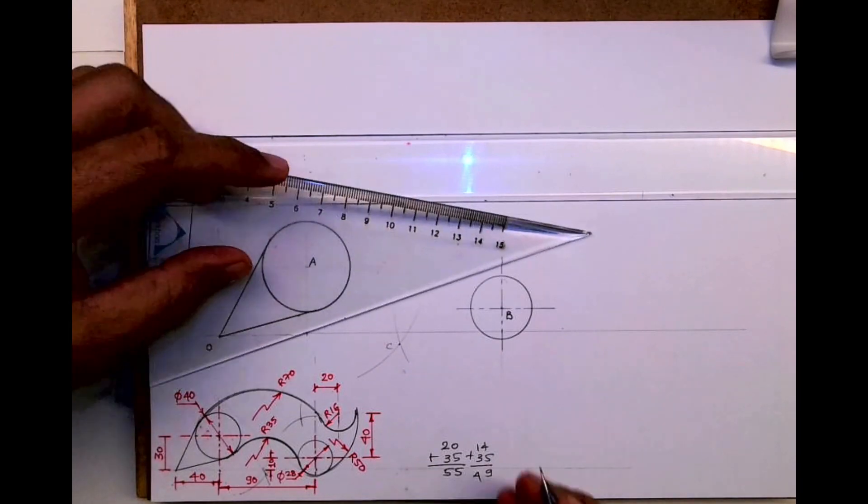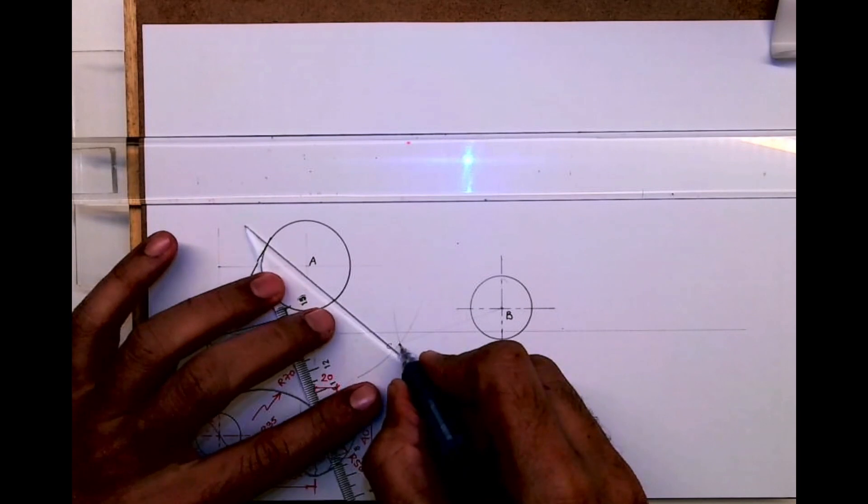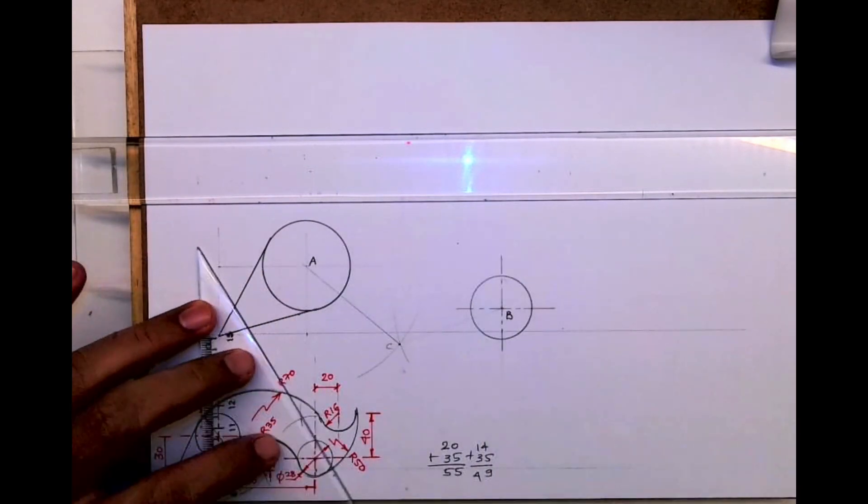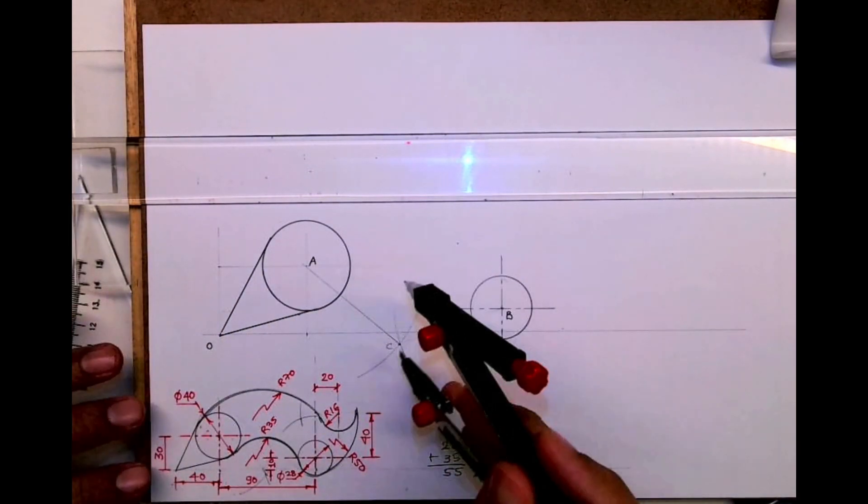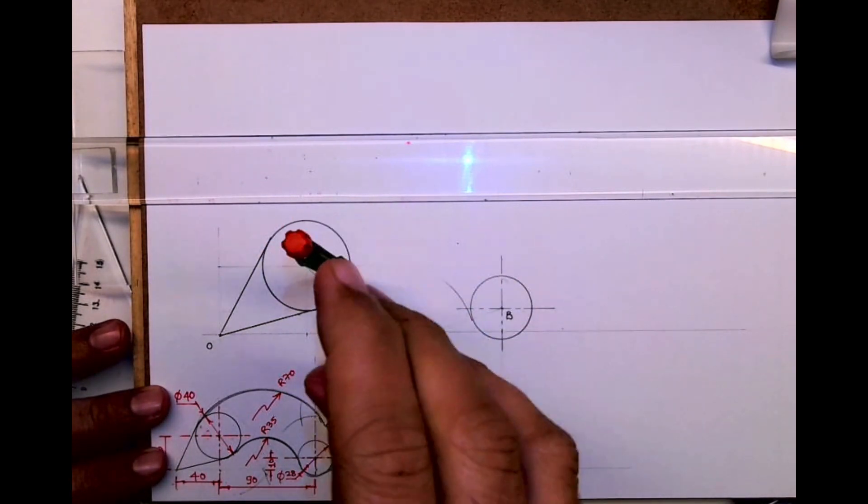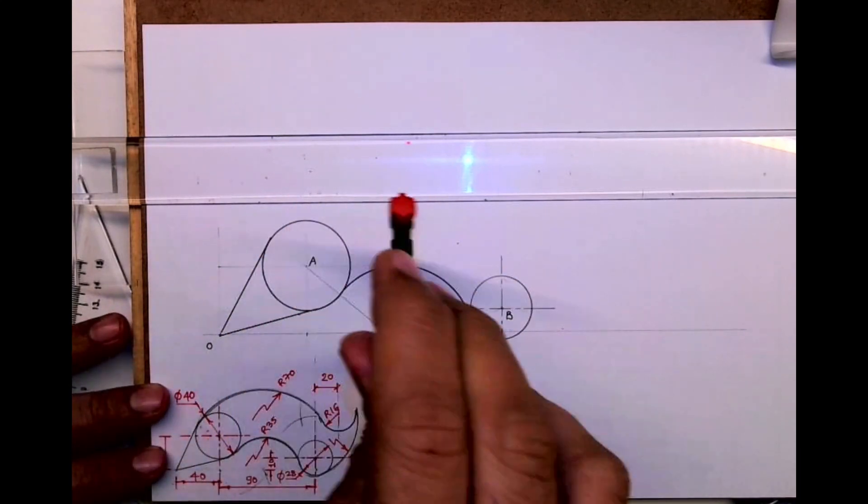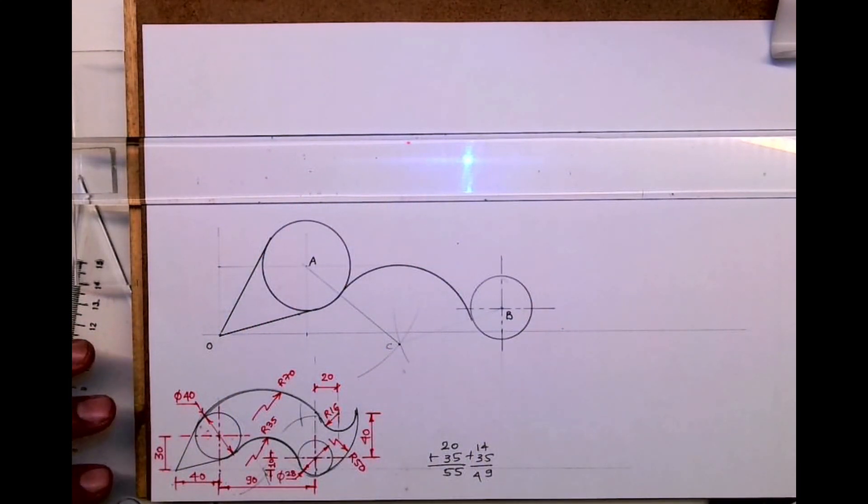Now see, when we're drawing this, one way is to do radius 35. Other way is to join B to C and A to C, so we'll get the exact point from where we need to draw the curve. This will be 35, but you'll come to know the exact point where it is touching the circle.